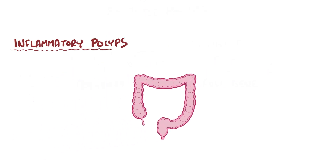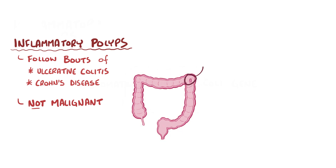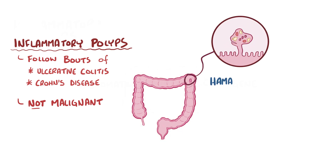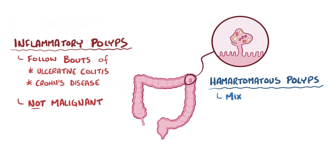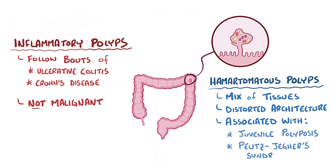Another type of polyp are inflammatory polyps, which often follow a bout of ulcerative colitis or Crohn's disease, and don't become malignant. A final group are hamartomatous polyps, which are normally made up of a mixture of tissues and have a distorted architecture. Hamartomatous polyps are often associated with genetic syndromes like juvenile polyposis and Peutz-Jeghers syndrome.